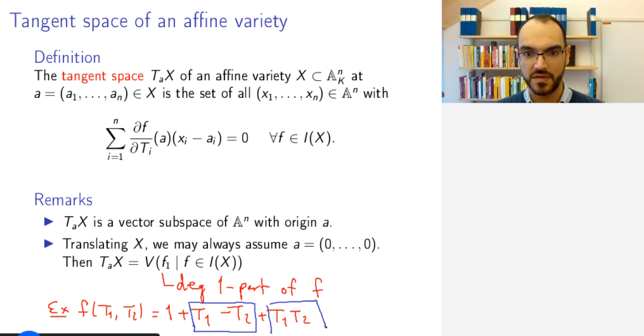So, the derivative of this, say, with respect to t2 is t1, which at 0 is 0. And so, therefore, this is the same thing.